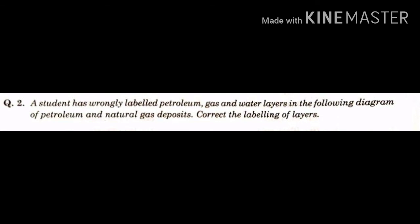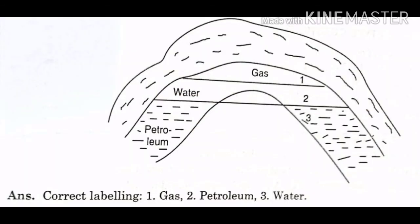Question number two. A student has wrongly labelled petroleum, gas and water layers in the following diagram of petroleum and natural gas deposits. Correct the labelling of layers. Look at the diagram. Here first one gas, second water and third petroleum given. Correct labelling by first one gas, second petroleum and third water.